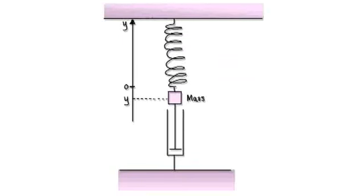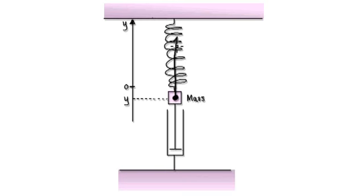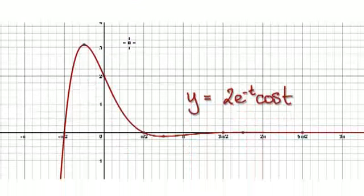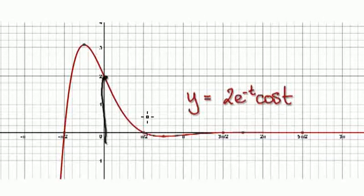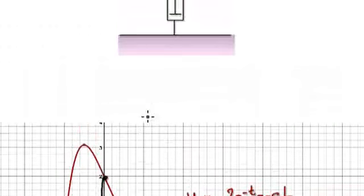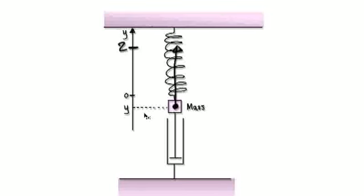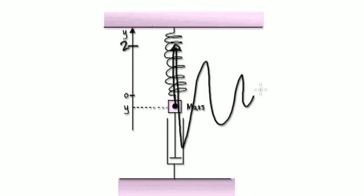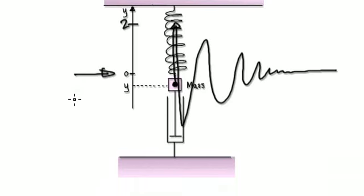Let's give you some more practice. Let's say you're an engineer and you've just invented a device that would dampen your spring. You would start, push your spring up to a level of 2 on the graph, and then you're going to release it. When you release it, it's going to do something like this, and over time it will settle at its equilibrium point.